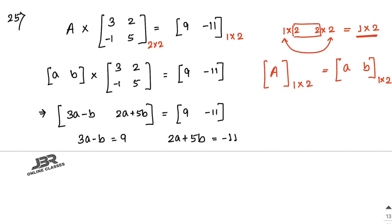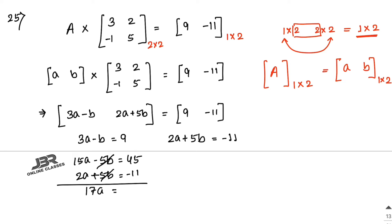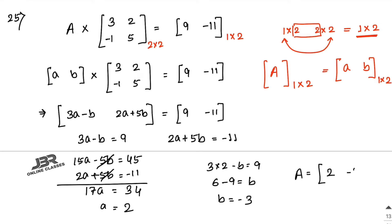Multiply the first equation by 5: 15a minus 5b equals 45. Adding to 2a plus 5b equals minus 11 gives 17a equals 34, so a equals 2. Substituting back: 6 minus b equals 9, so b equals minus 3. Therefore matrix A equals [2, -3]. That is your answer.